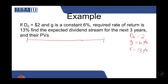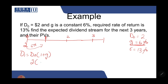First, let's make a timeline: 0, 1, 2, and 3. The current dividend D0 is 2 and it's going to grow at a 6% rate. So D1 will be D0 times (1 + g), which gives us 2.12.